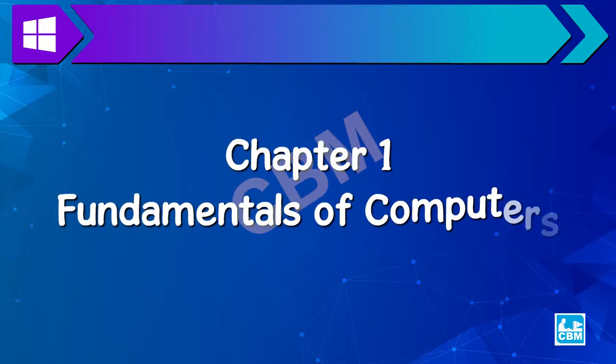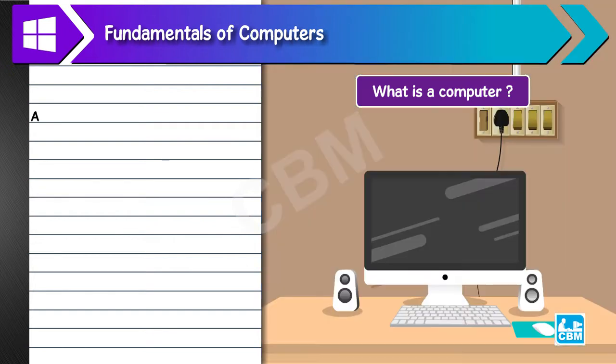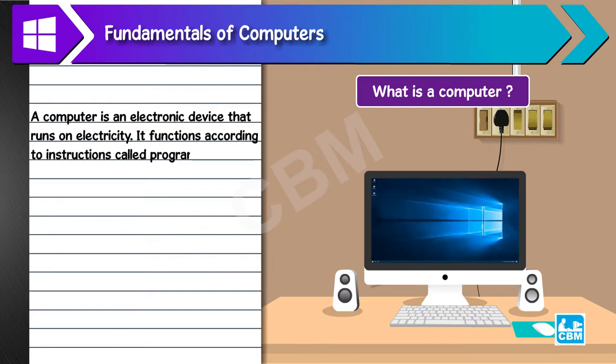Chapter 1: Fundamentals of Computers. What is a computer? A computer is an electronic device that runs on electricity. It functions according to instructions called programs. It has the ability to store, retrieve, and process data.